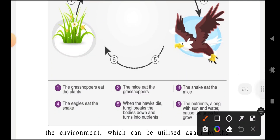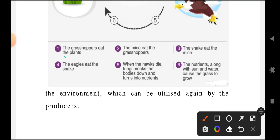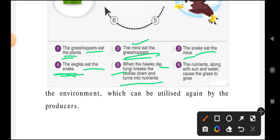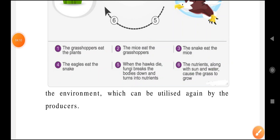When eagles die, their bodies get decomposed. Decomposition turns them into nutrients, which go back to the plants. So: plants are the producers, grasshoppers eat the plants, mice eat the grasshoppers, snakes eat the mice, and eagles eat the snakes. When eagles die, fungi and bacteria break down the bodies into nutrients, which along with sunlight and water cause the grass to grow again. This is the food chain system.